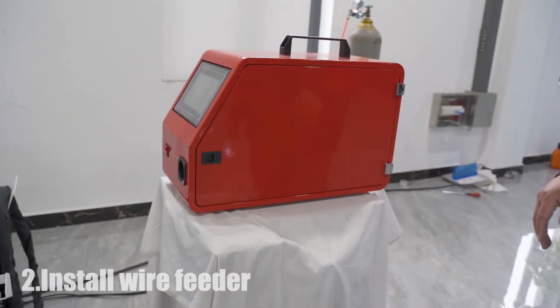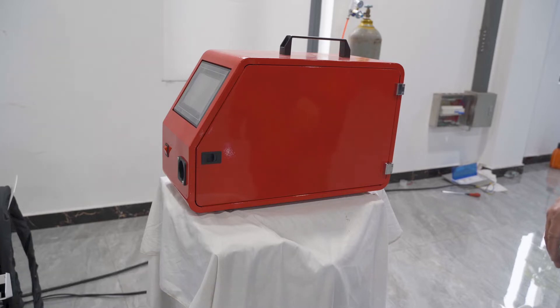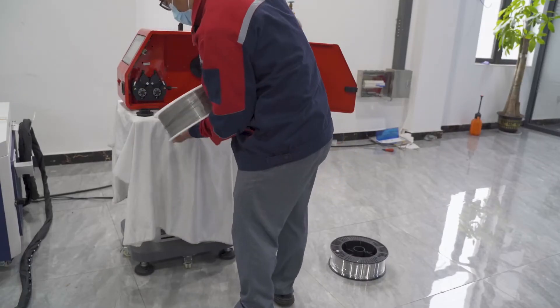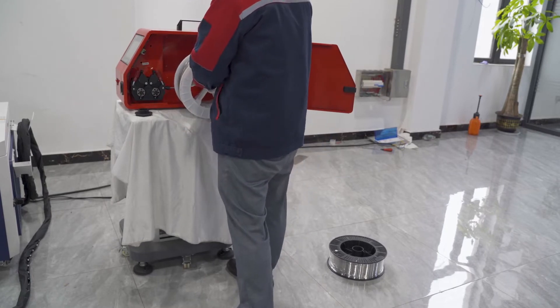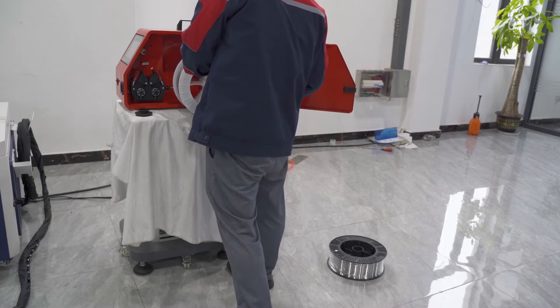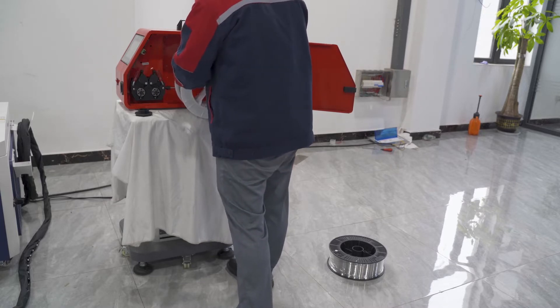The second step, we will introduce how to install the weld feeder. We have different welds. If you want to weld stainless steel, you need to use the stainless steel weld. The aluminum weld is used in aluminum welding.